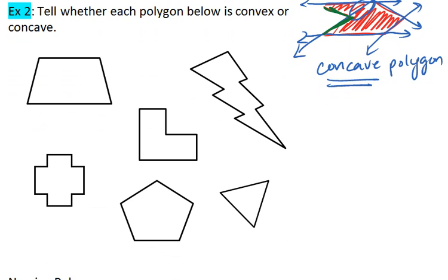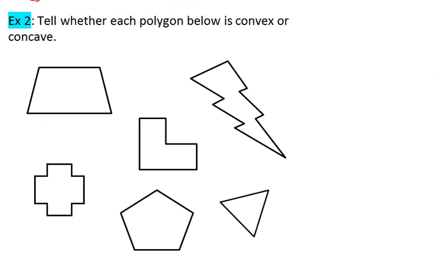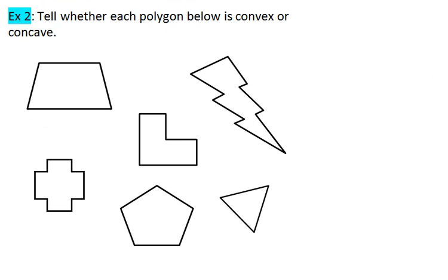If you feel comfortable with those definitions, try example two. Look at the polygons below and determine which ones are concave and which ones are convex. Pause the video and then restart when you're ready to see your solution.